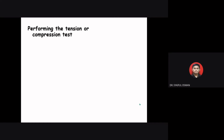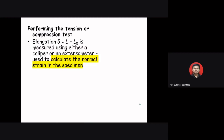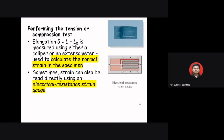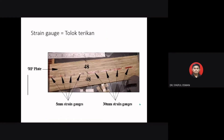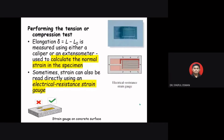To perform tension or compression testing, if we want to determine the elongation, we can use either a caliper or extensometer to calculate the normal strain in the specimen. Sometimes the strain can also be read directly using an electrical strain gauge. The purpose of the strain gauge is to measure the strain or change in length of the specimen — we can stick the strain gauge on the specimen during testing.